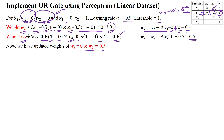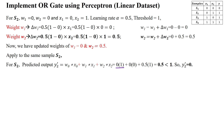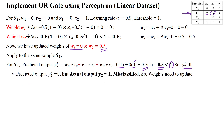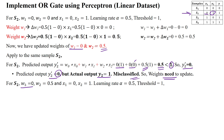Apply the updated weights w1=0, w2=0.5 back to sample 2: w0·x0 + w1·x1 + w2·x2 = 0 + 0·0 + 0.5·1 = 0.5. Comparing with the threshold value of 1, 0.5 is less than 1, so y' = 0. The actual output is 1 and the predicted output is 0 — it is still misclassified, so we must update the weights again.